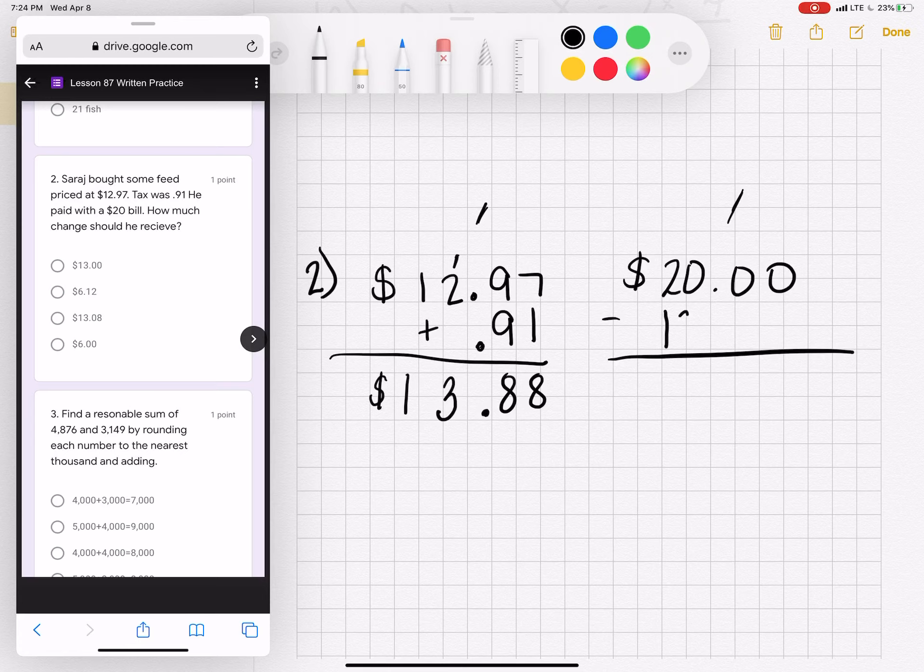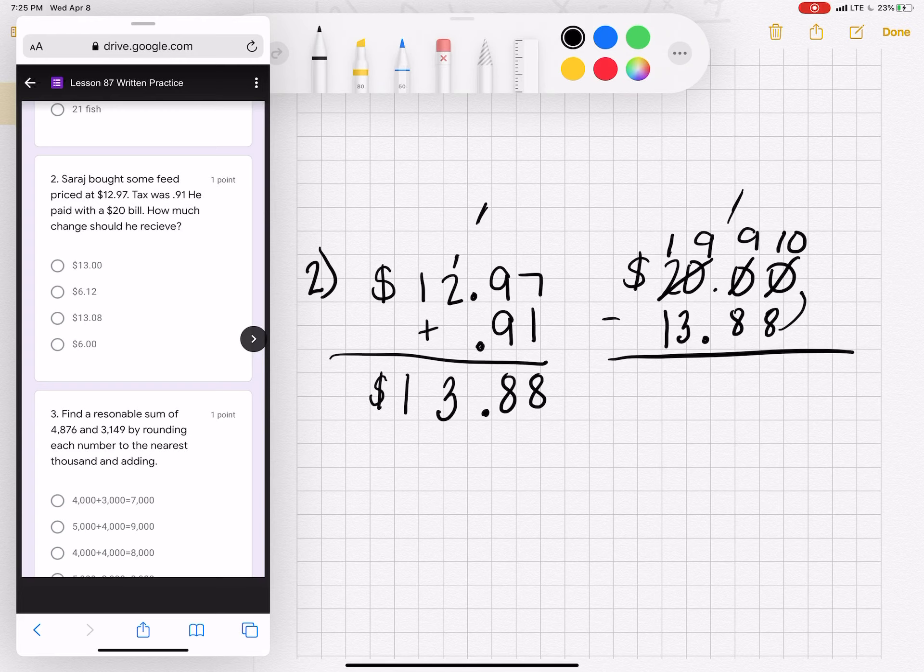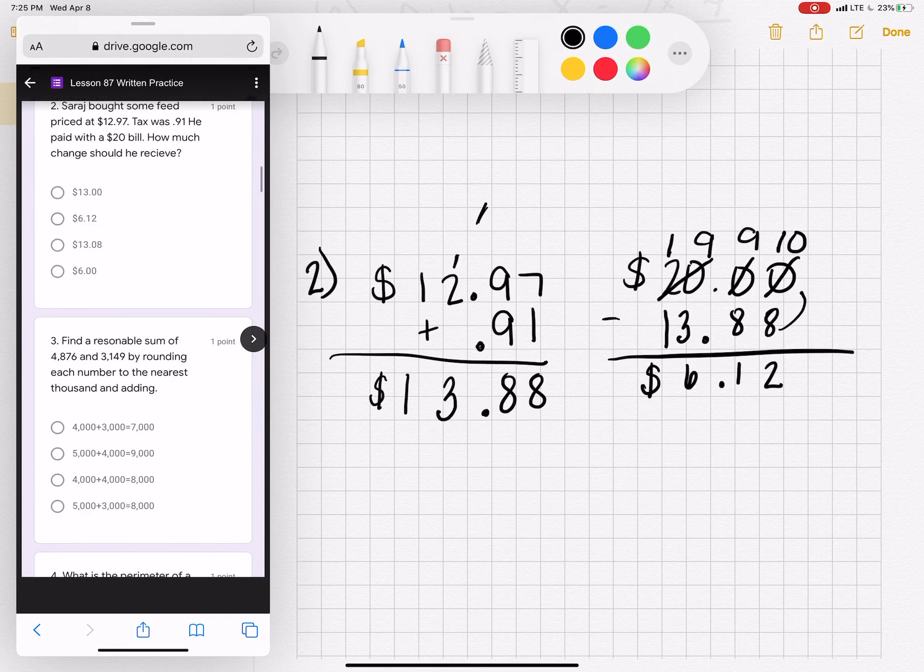That is what I need to subtract from $20. Now I need to borrow because I cannot take 8 out of 0. So I'm going to borrow from 20. Make it a 19. This 0 becomes a 9. And your last digit becomes a 10. 10 minus 8 is 2. 9 minus 8 is 1. Bring down your decimal. 9 minus 3 is 6. And 1 minus 1 is nothing. So the final answer should be $6.12. That is an option. Please choose $6.12.